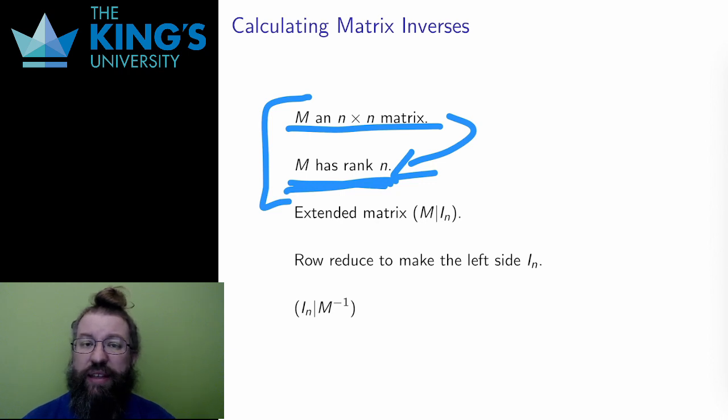Basically, the matrix doesn't involve any kind of projection. A projection, something that collapses space down to a lower dimension, is never invertible. You can collapse down to a line or a plane, but you can't undo this.